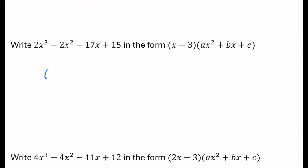Now the same in-my-head approach for the example with (x minus 3). To get 2x³, I need 2x². That produces minus 6x², but I want minus 2x², so I boost by 4x². I add a 4x, but that produces an extra minus 12x, and I actually want it down to minus 17x, so I need an extra negative 5x — meaning the next term is minus 5. And conveniently, minus 3 times minus 5 gives the 15 we need.